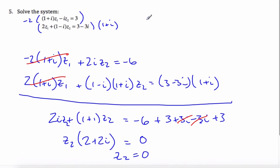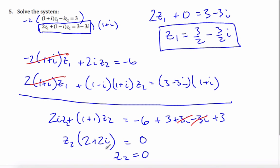So now I can take this equation here, 2z1 plus 0 is equal to 3 minus 3i. So z1 will be 3 halves minus 3 halves i. And so here is our solution to this system of equations.